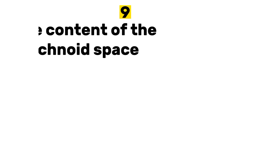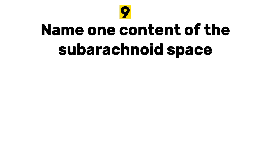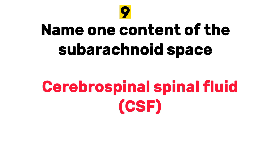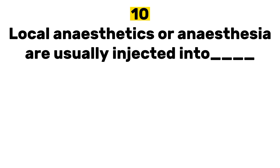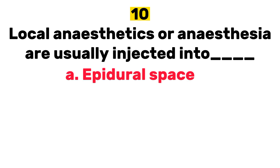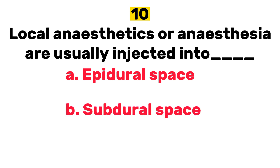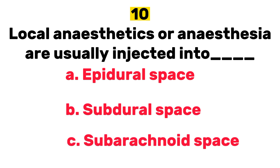Number 9. Name one content of the subarachnoid space. Cerebrospinal fluid. Number 10. Local anesthetics or anesthesia are usually inserted into: A. Epidural space. B. Subdural space. C. Subarachnoid space. Answer: A. Epidural space.